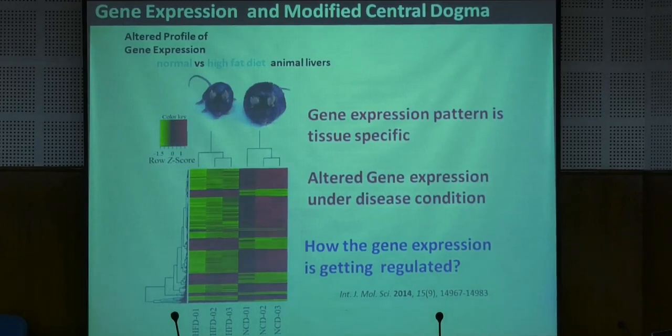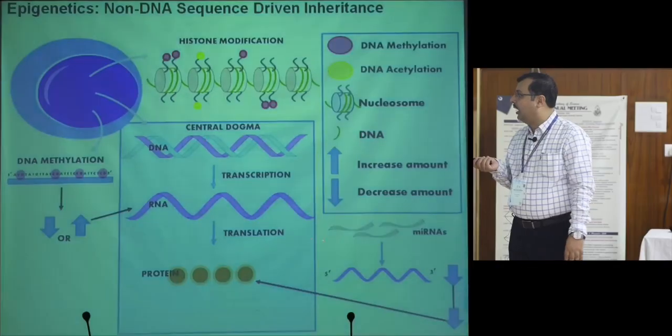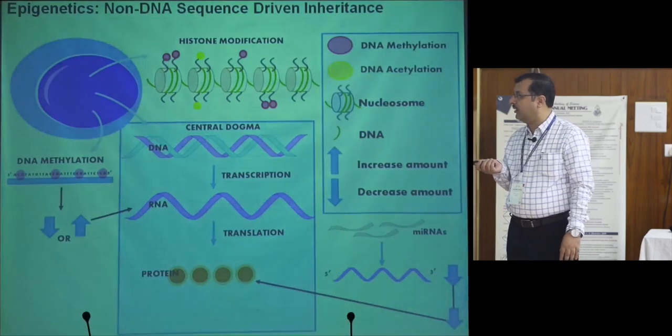How gene expression is getting regulated is the fundamental question I try to understand. To that end, I would like to introduce the central dogma of molecular biology, where DNA gets transcribed into RNA and then translated into protein. In this process, transcription is heavily regulated, and translation as well, and the protein also gets modified and regulated for its expression.